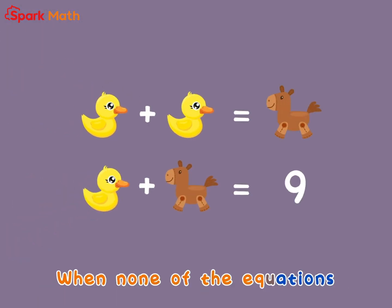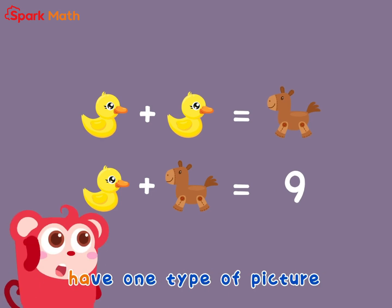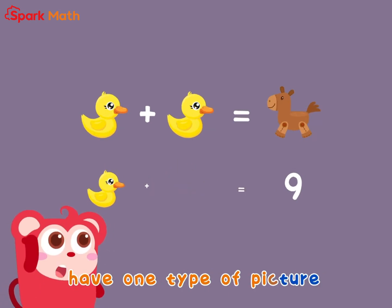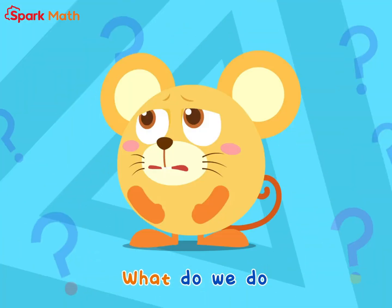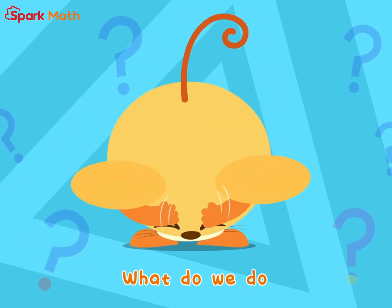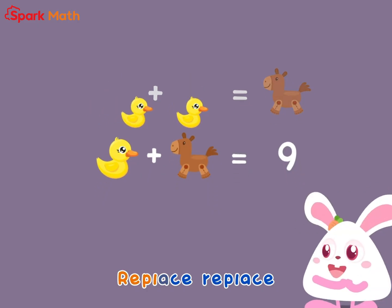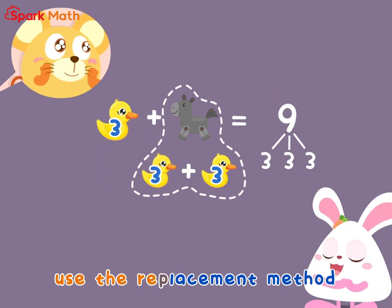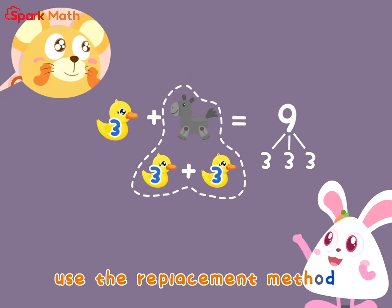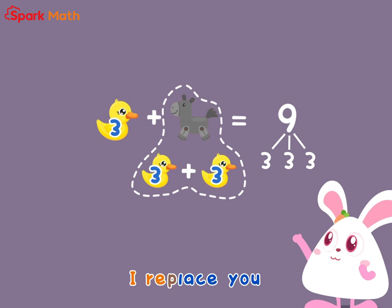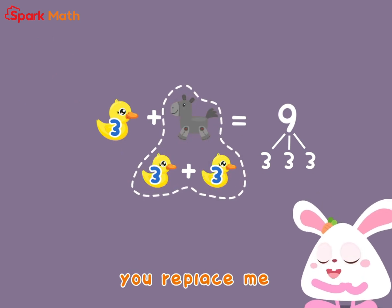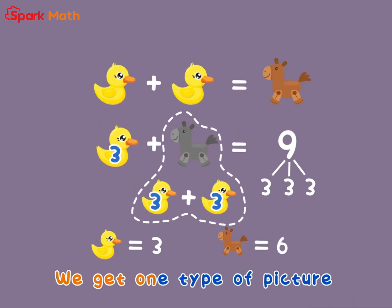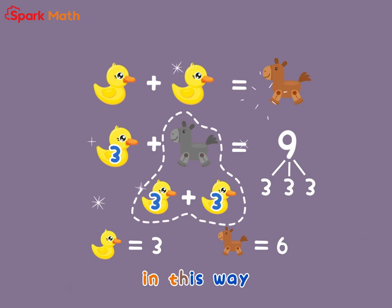When one of the equations has one type of picture, what do we do? We replace — use the replacement method. I replace you, you replace me. We get one type of picture in this way.